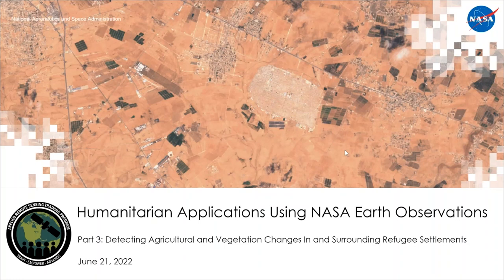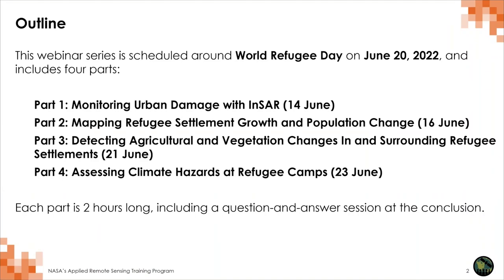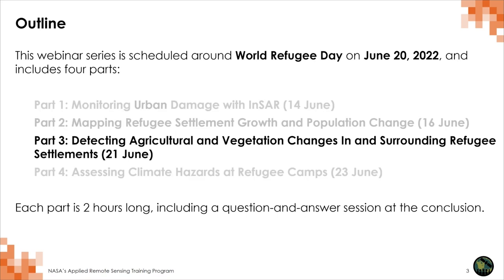Welcome to Part 3 of our humanitarian applications using NASA Earth Observations webinar series. Today we'll be talking about detecting agricultural and vegetation changes in and surrounding refugee settlements. This series is scheduled around World Refugee Day on June 20th, 2022, and has four parts. Part 1 covered monitoring urban damage with SAR, Part 2 was mapping refugee settlement growth and population change, today is agriculture and vegetation, and Thursday will cover assessing climate hazards at refugee camps.